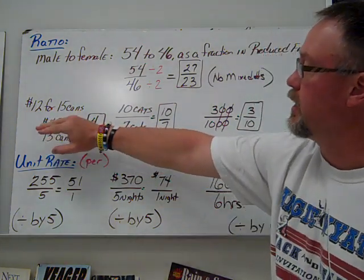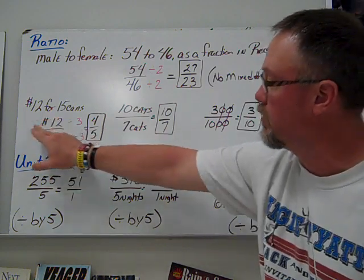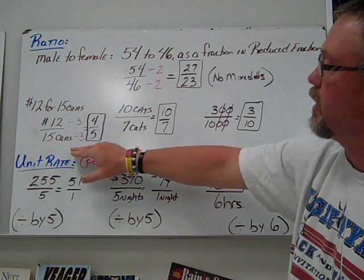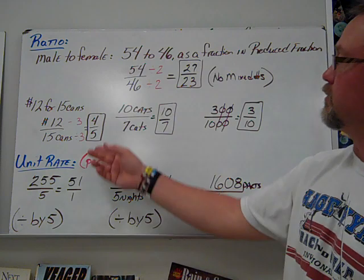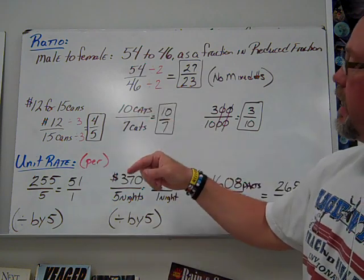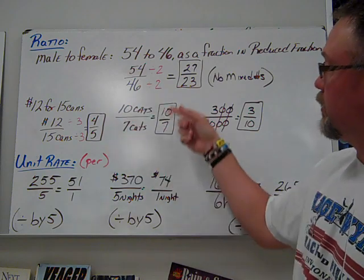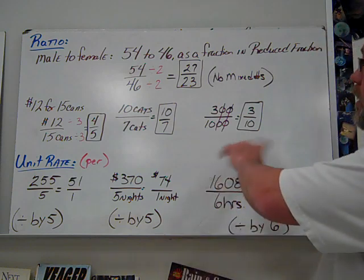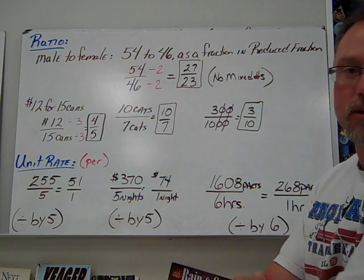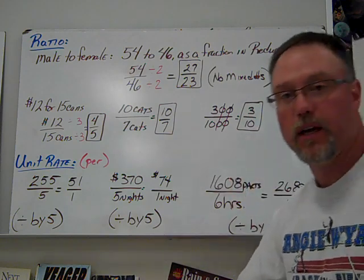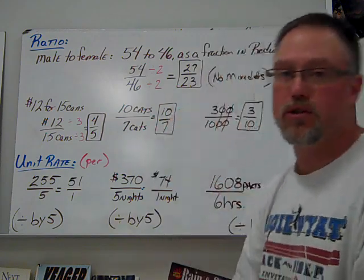We can also compare dollars to cans or dollars to products. $12 to 15 cans. Divide by 3, you have four-fifths. Ten cats to seven cats, nothing reduces, so it's just 10 over 7. Our last one is 300 over 1,000. Cross out two zeros and we end up with 3 over 10. That's just ratios, setting one number over the other. If you can reduce it, you want to do that.